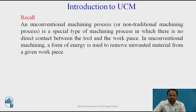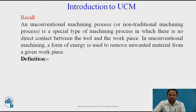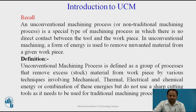An unconventional machining process, or non-traditional machining process, is a special type of machining process in which there is no direct contact between the tool and the workpiece. In unconventional machining, a form of energy is used to remove unwanted material from a given workpiece. It is defined as a group of processes that removes excess stock material from a workpiece by various techniques involving mechanical, thermal, electrical, and chemical energy, or a combination of these energies, but does not use sharp cutting tools as required in traditional machining processes.